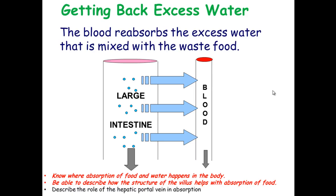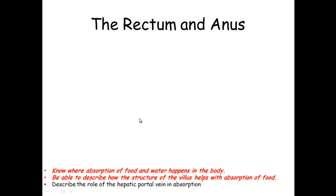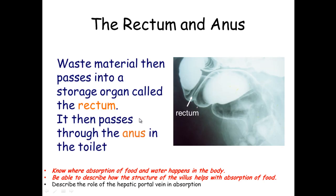Any undigested food carries on past the small intestines into the large intestines, where water reabsorption takes place. Any excess water still mixed with the waste food gets reabsorbed back into the bloodstream. The waste material then passes towards the rectum and the anus — the rectum is where waste is stored and the anus is where it passes through.